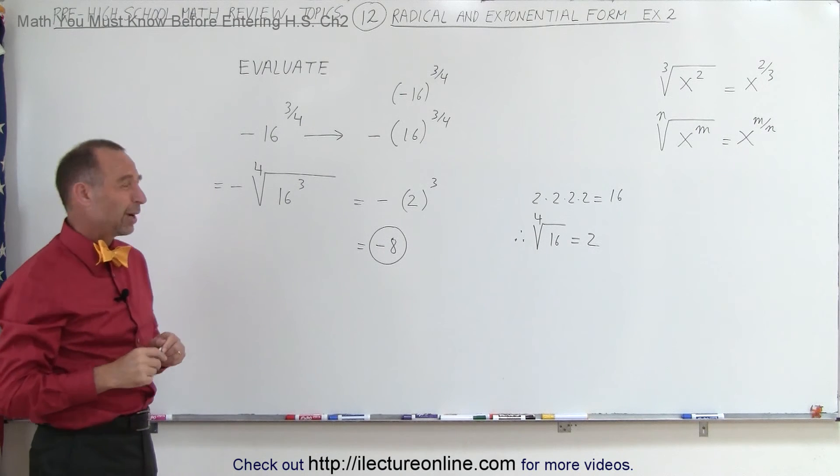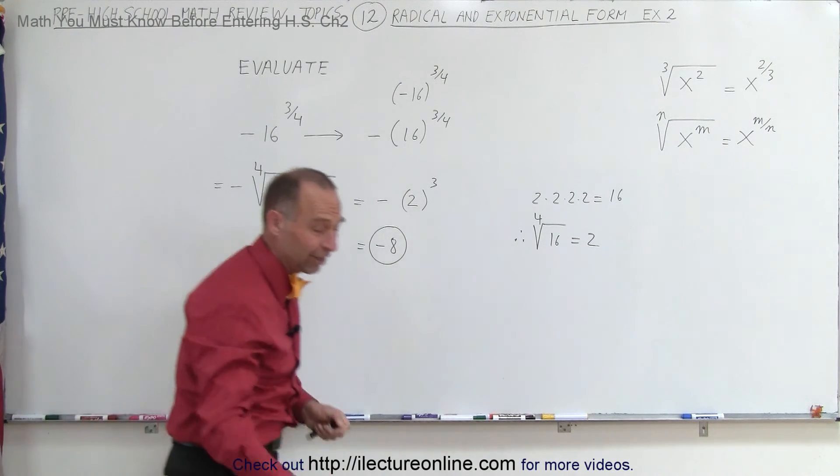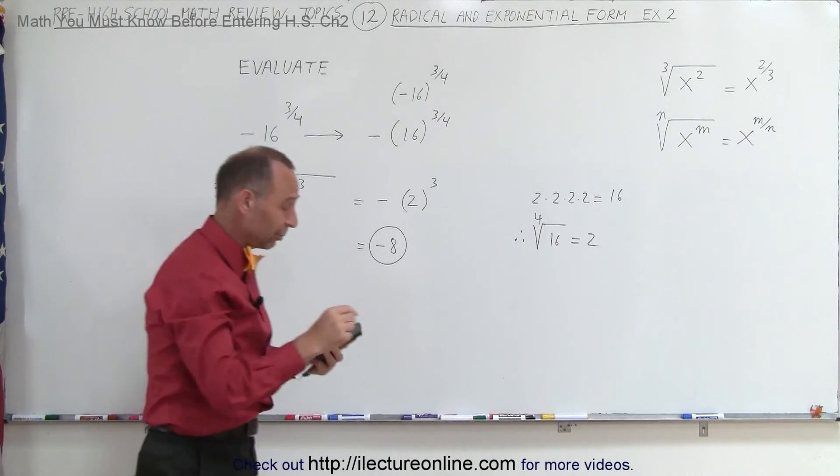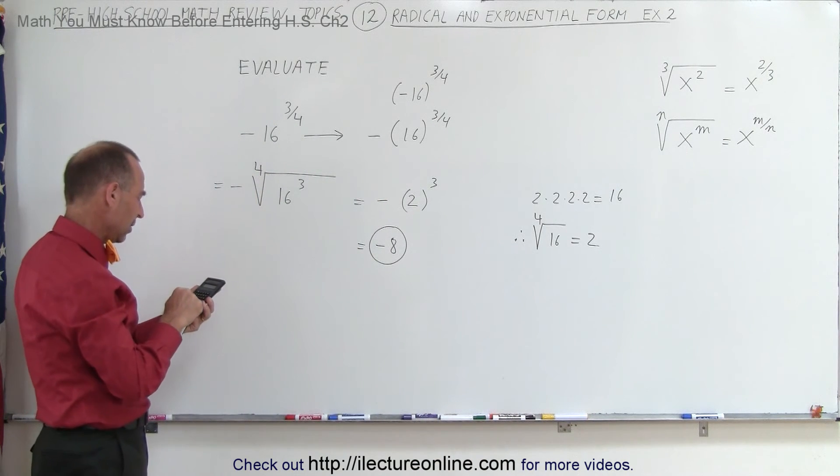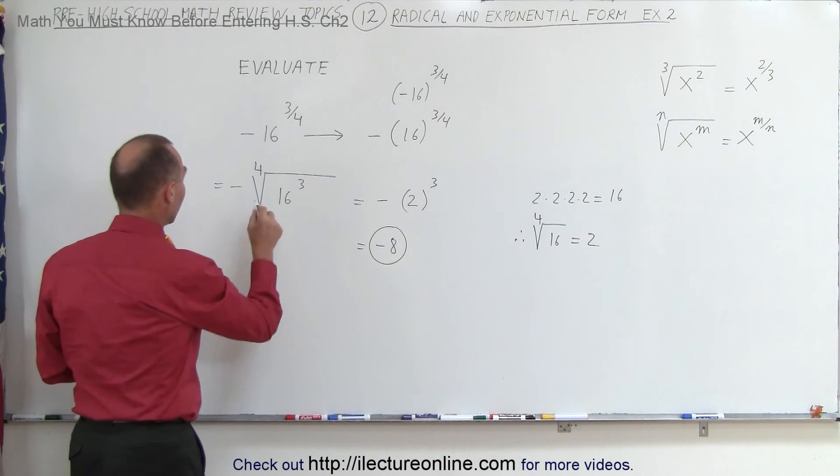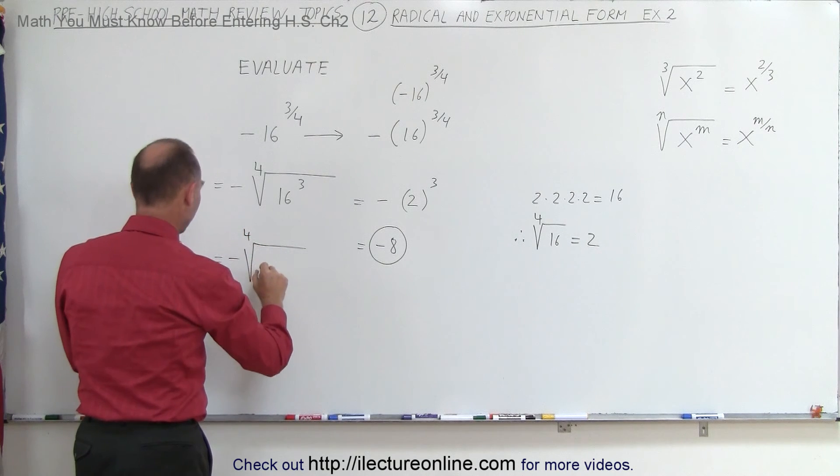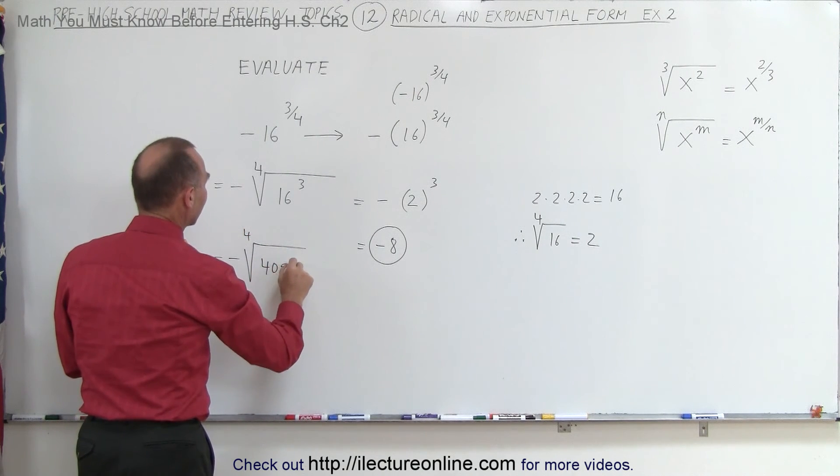We could have done it the other way, but 16 to the 3rd power is a pretty big number. Let's take our calculator and see what the number equals. So 16 raised to the 3rd power equals 4096. So we could say this is equal to the negative of the fourth root of 4096.